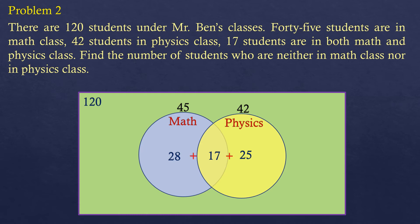So let's add: 28 plus 17 plus 25 equals 70. That means the total inside both circles — math and physics — is 70. To find how many are not in math or physics, we subtract from the total: 120 minus 70 equals 50. So there are 50 students who are not in Mr. Ben's math nor physics class. The answer is 50.